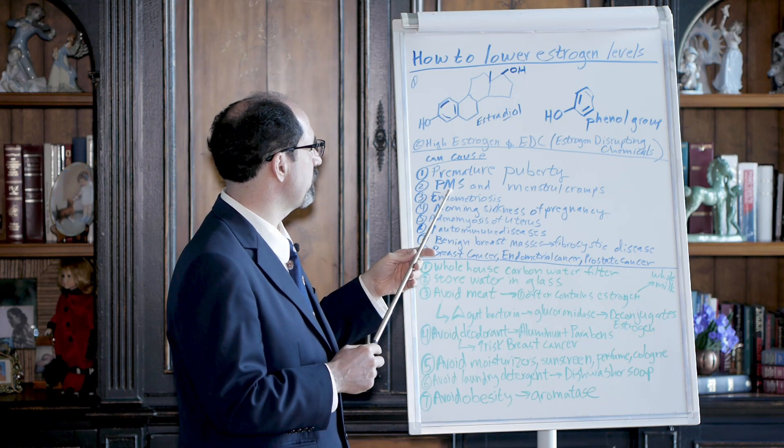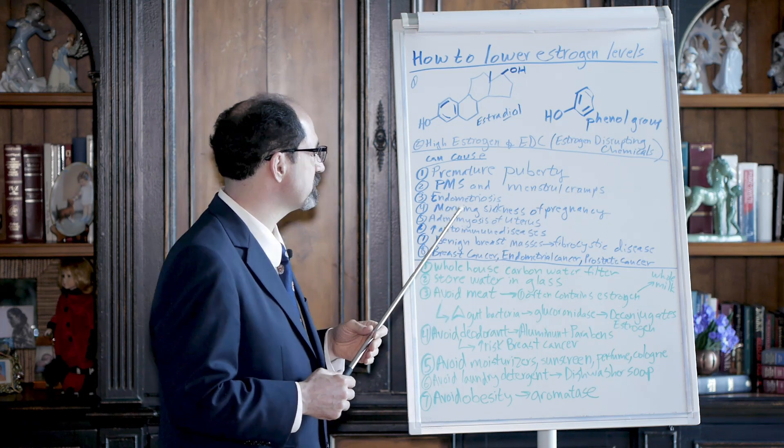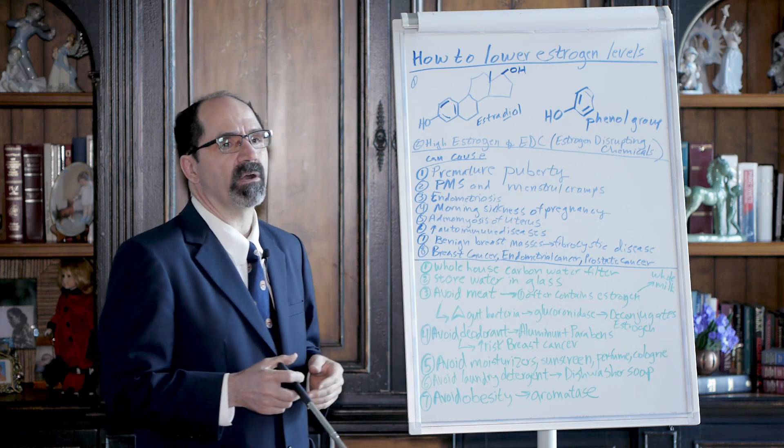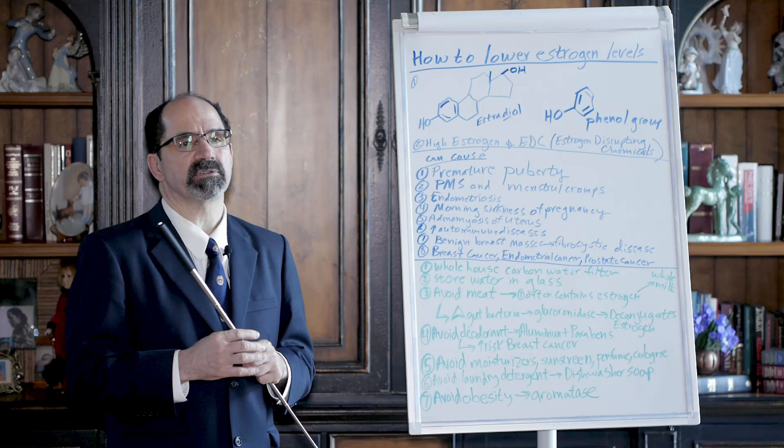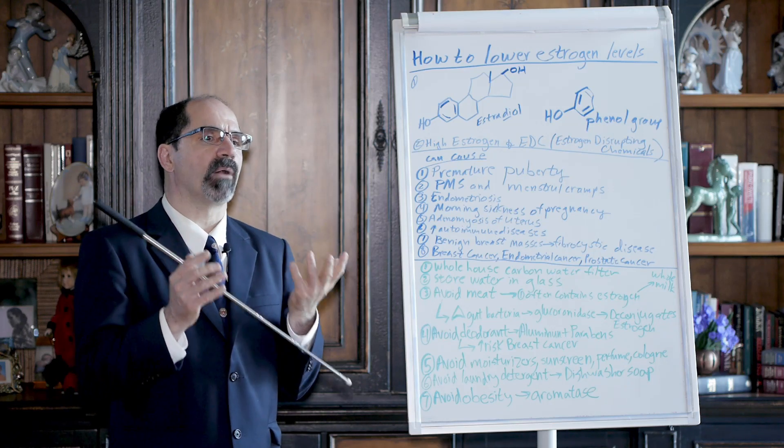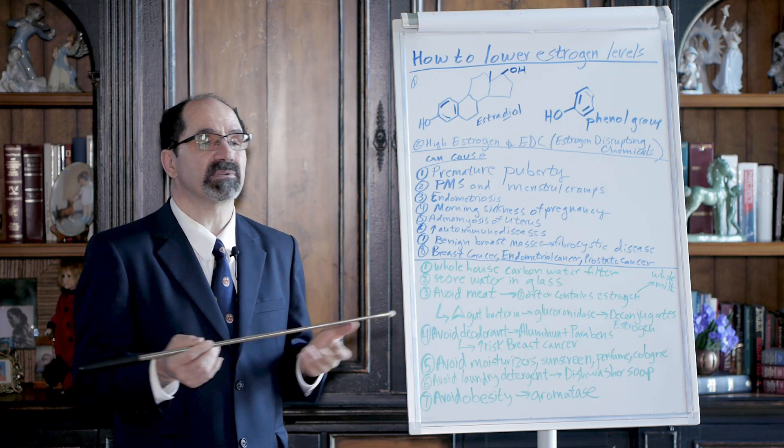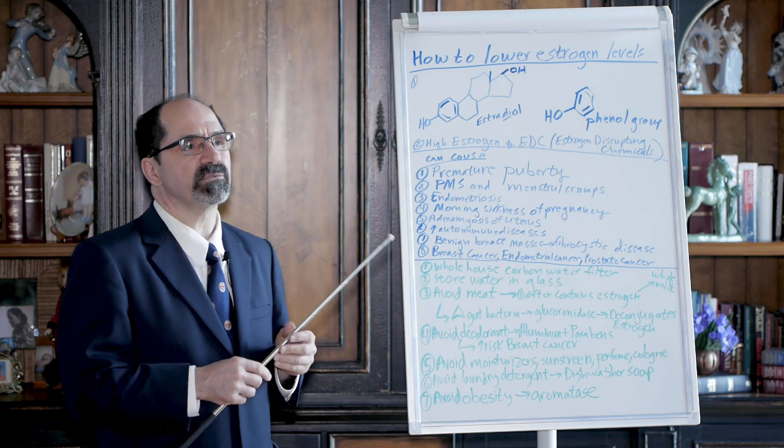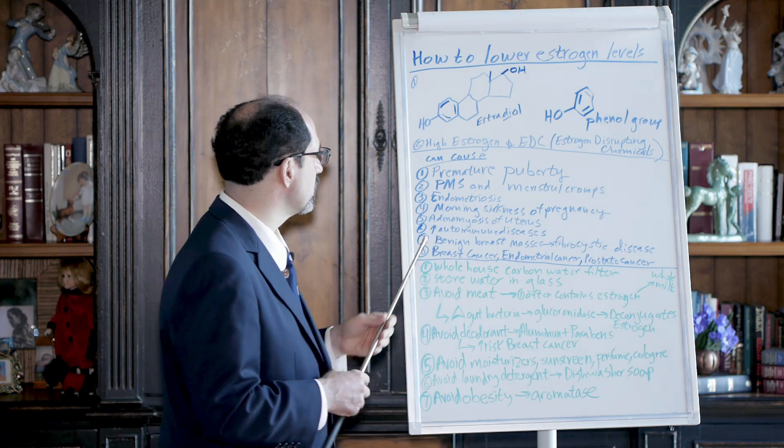Next thing is premenstrual syndrome and menstrual cramps are increased by high estrogen levels. Endometriosis can be caused by that. I've known women who went and had all these surgeries for endometriosis and they never thought about their estrogen level. So if you're having one of these problems that's potentially estrogen related, see what you can do to reduce your intake of estrogen in your water, food, and transdermal exposure.